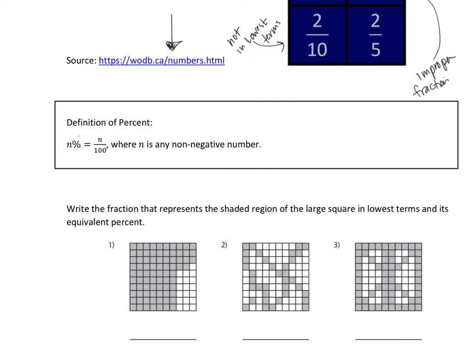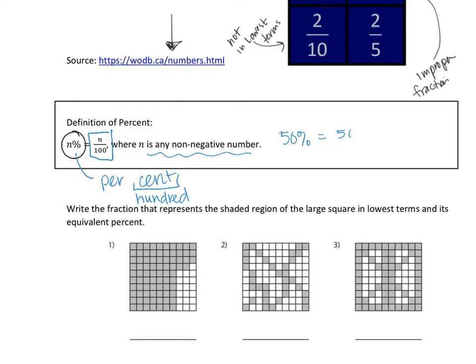We've heard of this symbol before in your life, but what does it really mean? Well, when we see 'per cent,' that really is from the Latin — 'cent' meaning 100. So we're saying for every 100, or per 100. You can see that little rate written there: n out of 100, where n is any non-negative number. So when we see something like 50%, we know that that's really meaning 50 out of 100. It's another way to write that rate, where your unit measurement is always out of 100.